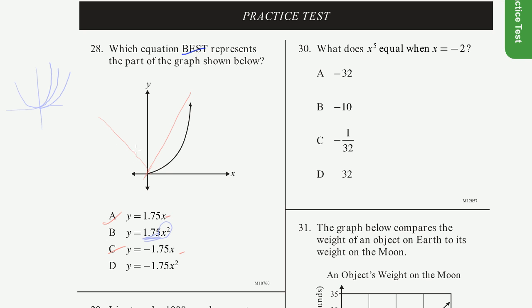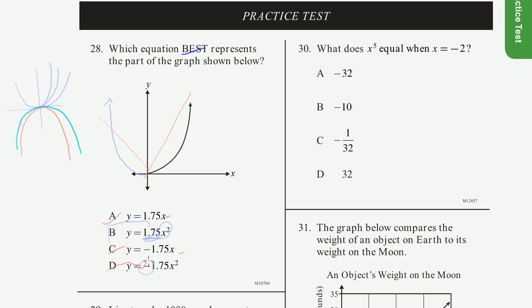Choice B is an upward-opening parabola — kind of an upright U — so this looks like a pretty good solution. Choice D is just like choice B except it has a minus sign. The graph of −1.75x² would be downward-opening, so that's not the right answer.